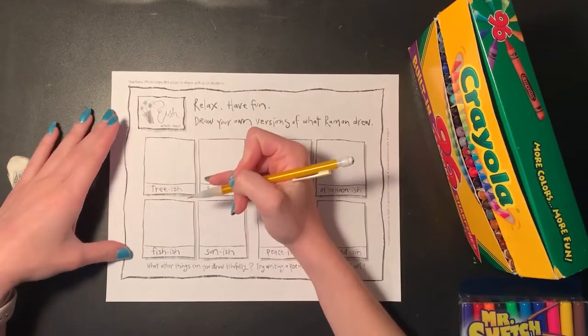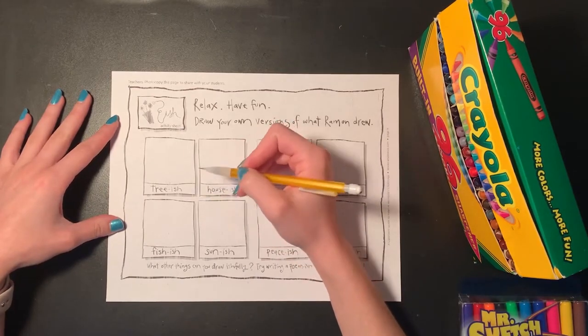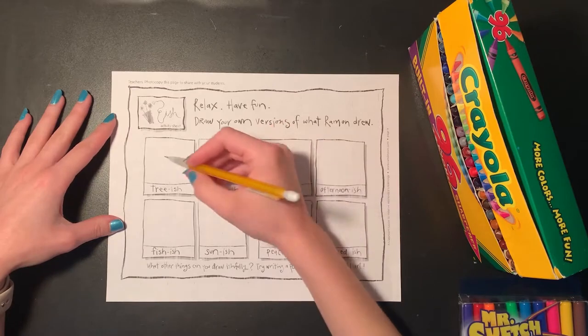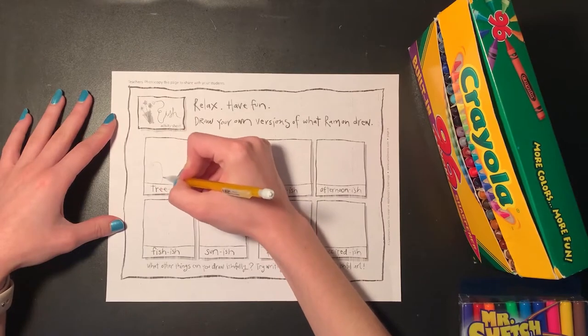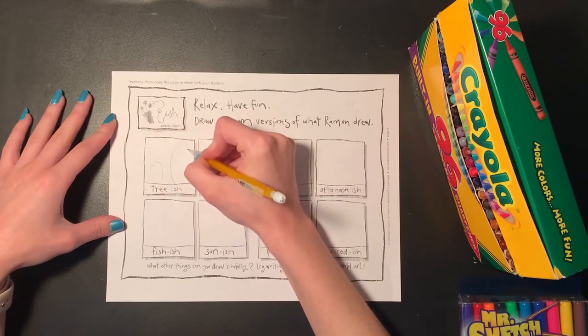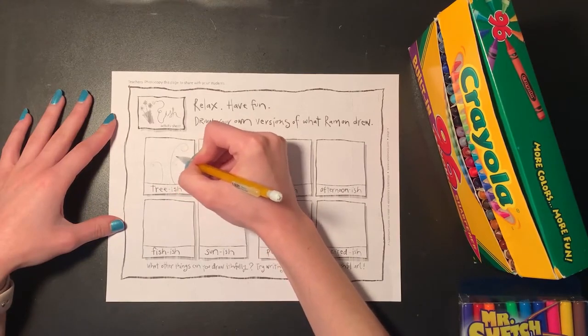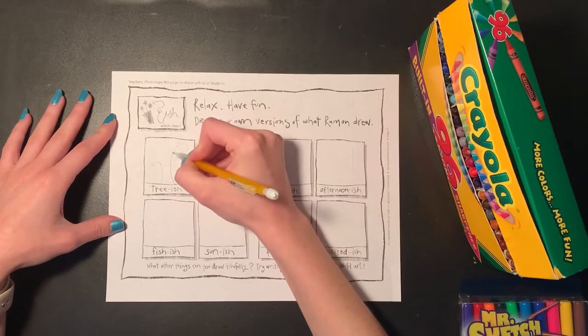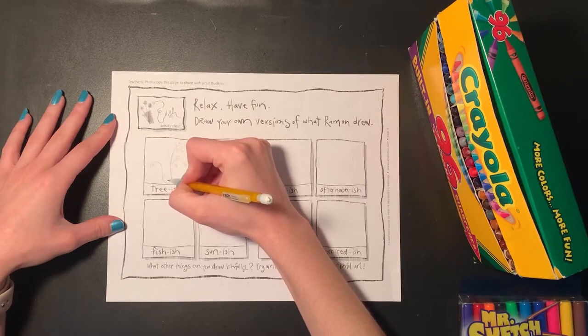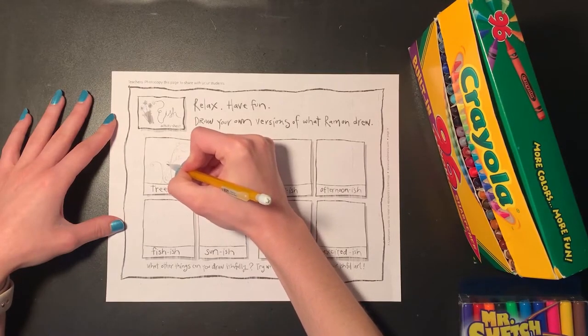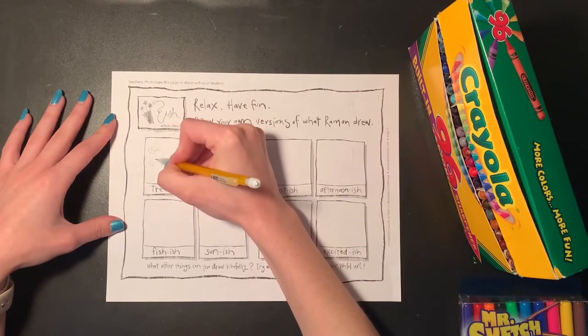So in our first box, it says tree-ish. We're going to draw a picture of a tree and again, not perfectly. It can be however you want it to look. It just needs to look tree-ish. So if you think it looks like a tree, then that is perfect. I'm going to start with my pencil, and yours is going to look different than mine. I'm giving my tree some big curly branches. So it doesn't look like a real life tree, but I think it is going to look tree-ish. I'm going to decorate my tree trunk with some other big swirling designs, but your tree can look totally different than mine.